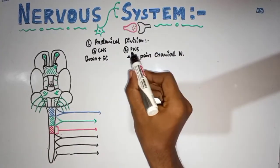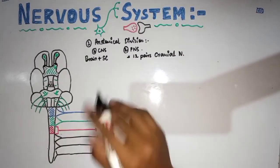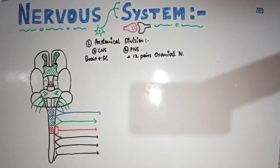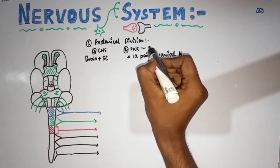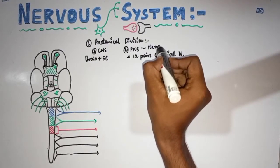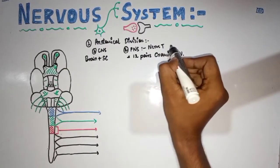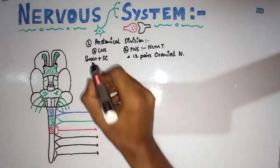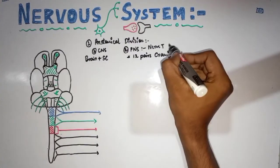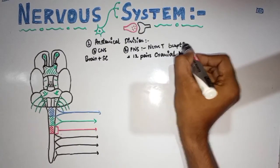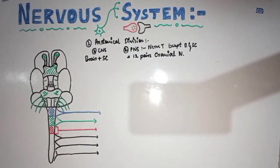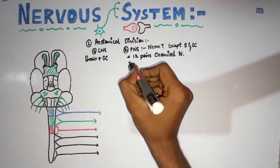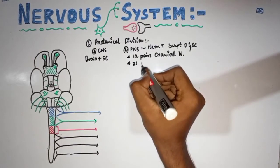Keep in mind that the PNS consists of every nerve tissue except the brain and spinal cord. The first component is the 12 pairs of cranial nerves, and the second is 31 pairs of spinal nerves.